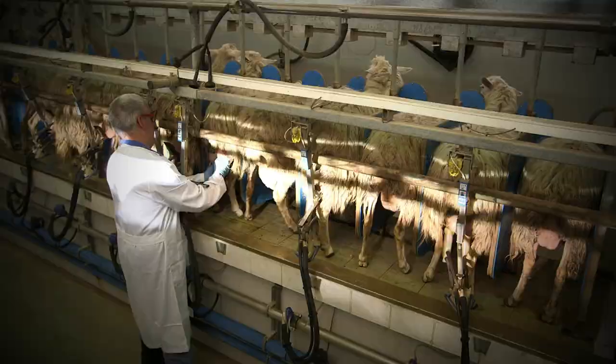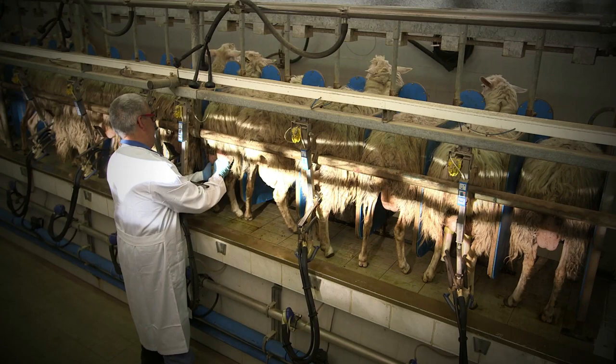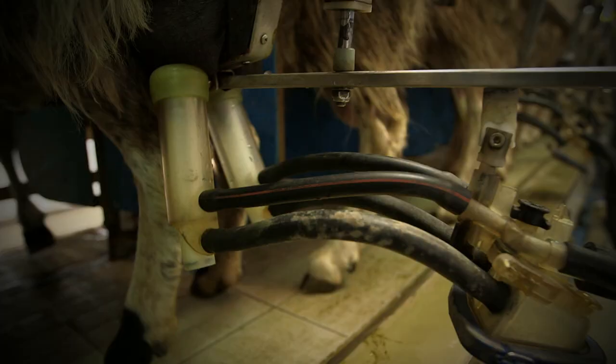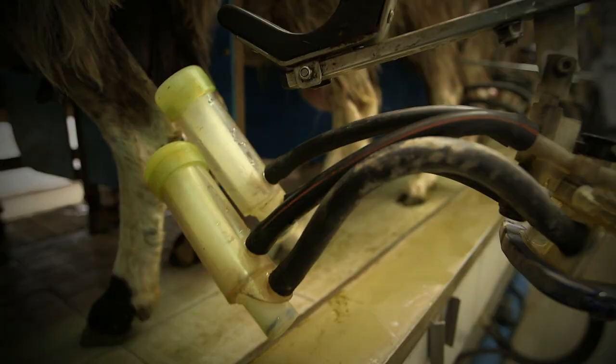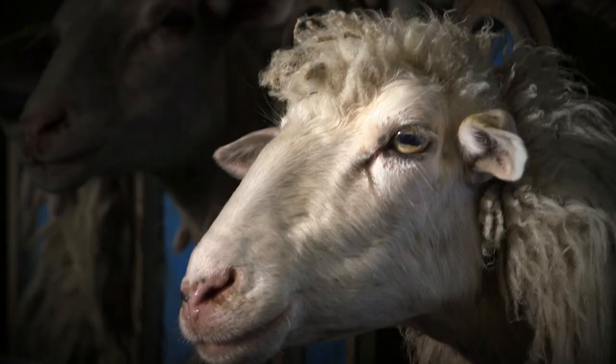Hand milking has been replaced by machines. Avant-garde facilities come complete with an innovative system that imitates lamb feeding characteristics and is highly beneficial for the sheep.